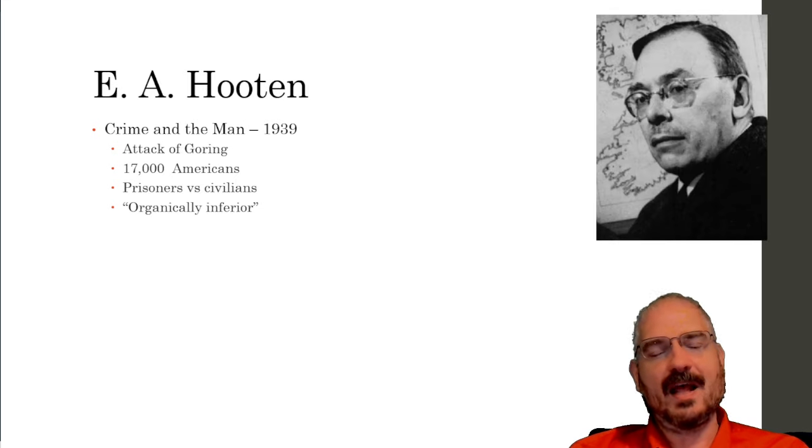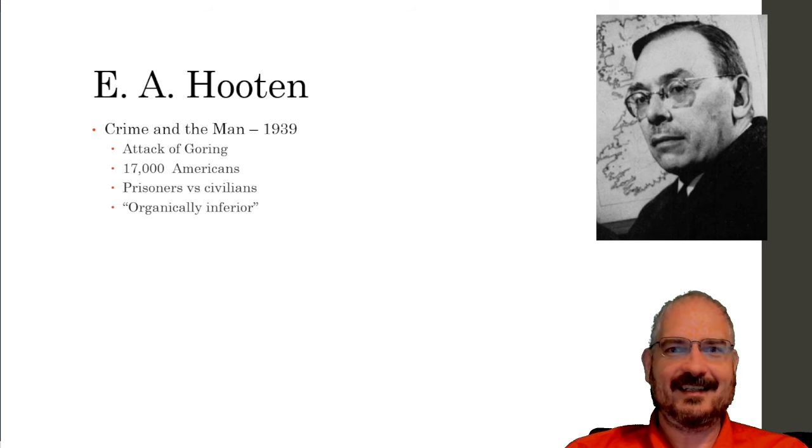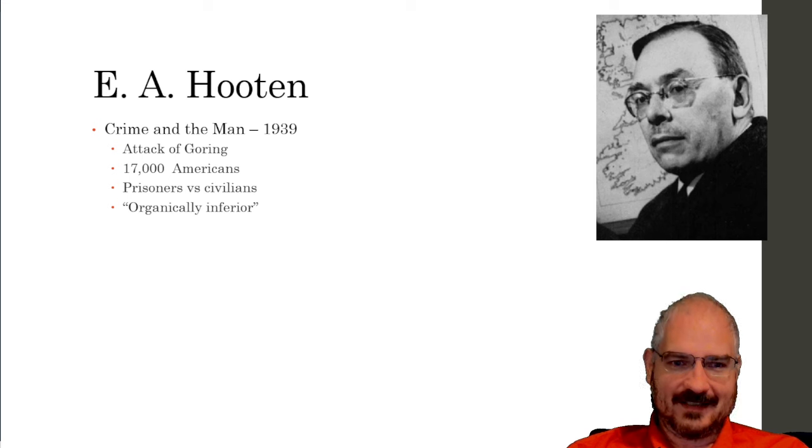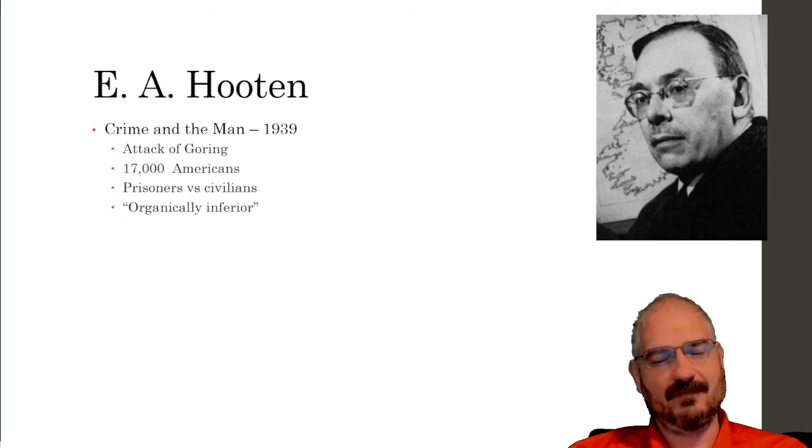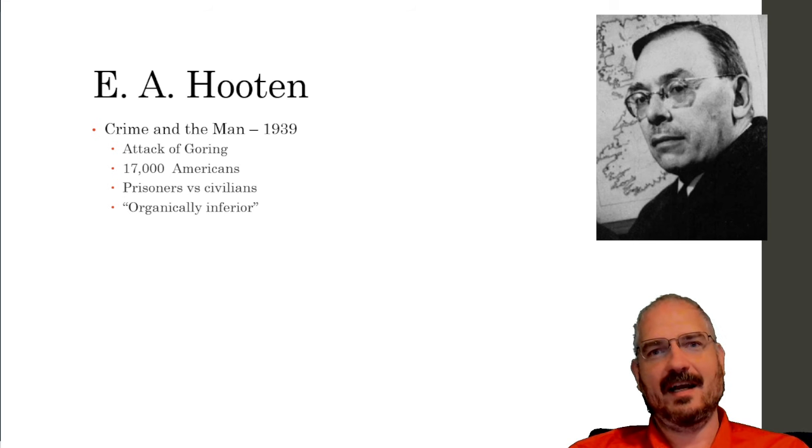Then we get to the United States and this guy Hooten. In 1939 he wrote a book called Crime and the Man where he attacked Goring but again came to the same basic conclusions as both Lombroso and Goring did. He did a big study of 17,000 Americans—again prisoners versus assorted civilian populations including professors, students, soldiers, firefighters, police, etc. His overall conclusion was that Lombroso and Goring were both wrong, but it is still very clear that crime is not due to social factors or environmental factors—it is due to the fact that criminals are organically inferior.